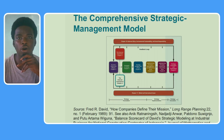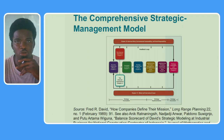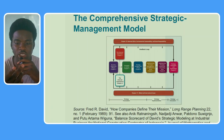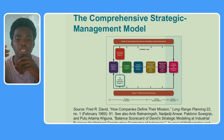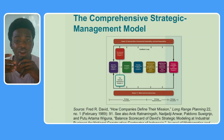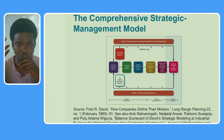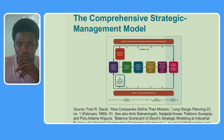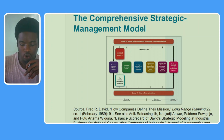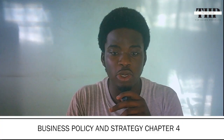Before we talk about our outline, let's take a look at the comprehensive strategic management model. Remember there are three steps in strategic management: strategy formulation, strategy implementation, and strategy evaluation. We are on the first phase, which is strategy formulation. That begins with developing the mission of a business, then you do your environmental assessment, look at strategies in action, and analyze your strategies. Chapter 3 was the external audit and Chapter 4 is the internal audit.